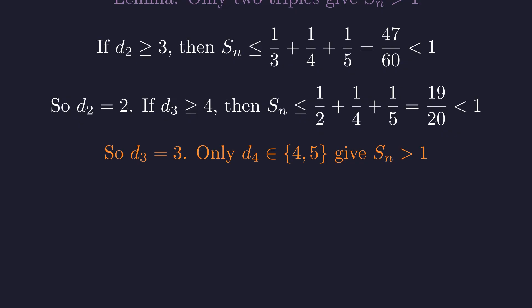Checking d4, we find that only d4 equals 4 or d4 equals 5 result in S_n being greater than 1.